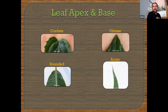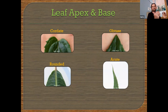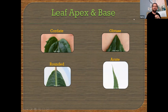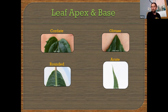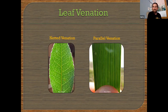Leaf bases — what is that bottom part of the blade doing? Cordate comes down and makes two humps, which a lot of folks refer to as a heart shape, coming into the top of a heart. The base can also be rounded. For the apex — the top of the leaf — it can be obtuse or acute, or it can be rounded, come to a point, or do other things. Just notate what the leaf is doing at the tip as well.